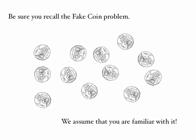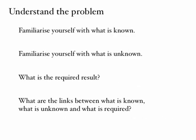Just a reminder: go and have a look at the video on the fake coin problem and have a go at trying to solve it. From now on, I'm going to assume that you know the problem well. The first thing to do in trying to write an algorithm is to understand the problem you're writing an algorithm for. That includes familiarising yourself with what is known about the problem and what is known about the situation in which the problem arises, and also what's unknown.